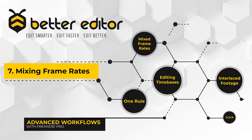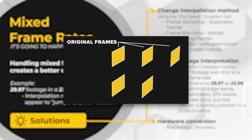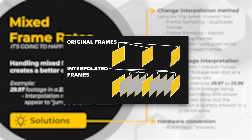One way of conforming one frame rate to another is to change its interpolation method. Interpolation is a fancy word for how the NLE estimates what missing frames should look like. Missing frames happen when changing the footage timing — like adding 23.98 footage into a 29.97 timeline. For a one-second clip, 23.98 footage is six frames shorter than a 29.97 clip, so Premiere needs to make up for those missing frames by interpolating them. This also occurs when footage is intentionally slowed down or sped up.